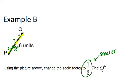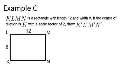Alright, and let's go to example C. KLMN is a rectangle with length 12 and width 8. If the center of dilation is K, with a scale factor of 2, draw K prime, L prime, M prime, N prime.